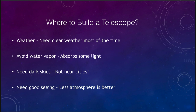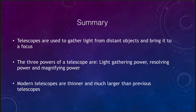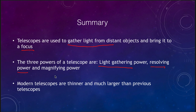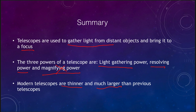To summarize: telescopes are used to gather light from distant objects and bring it to a focus. The three powers of a telescope are light gathering power, resolving power, and magnifying power — with magnifying power being the least important. Modern technology has allowed us to build mirrors that are much thinner and much larger than previously possible. That concludes our lecture on optical telescopes. We'll be back next time for another topic in astronomy — have a great day, everyone.